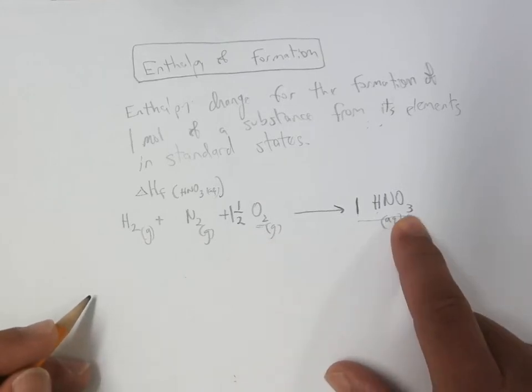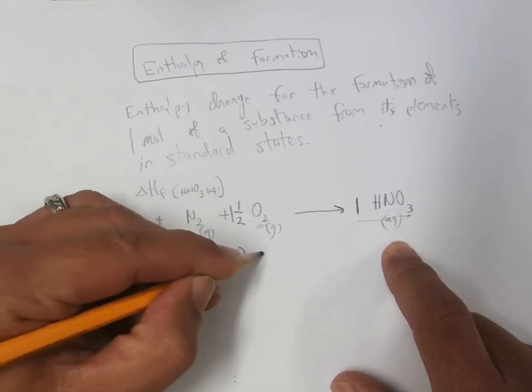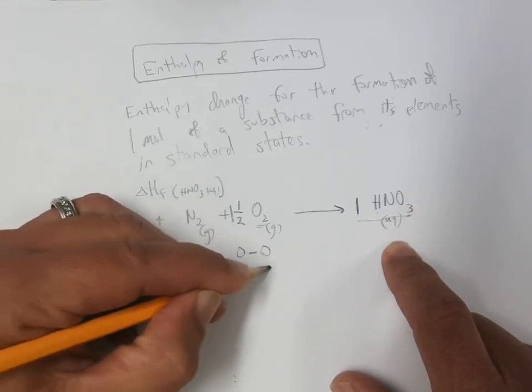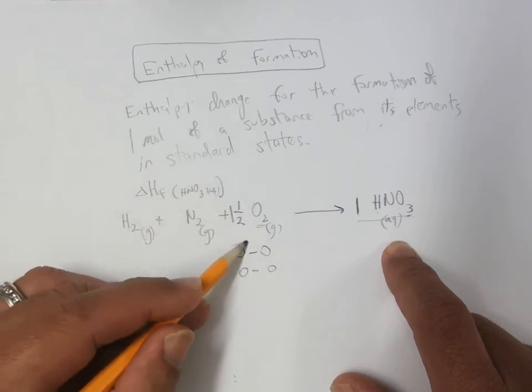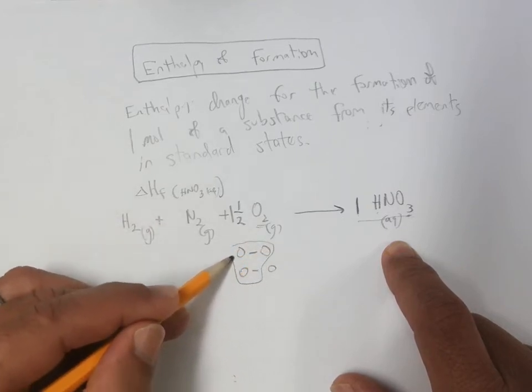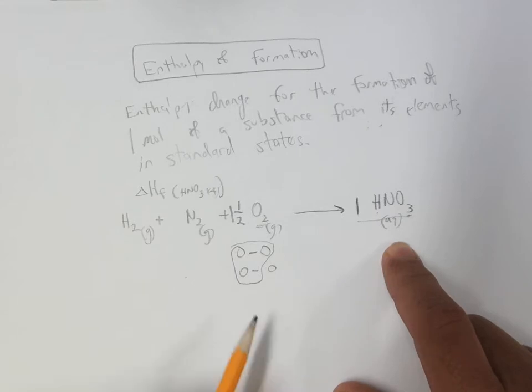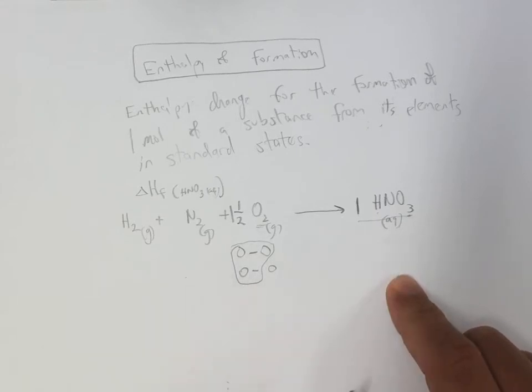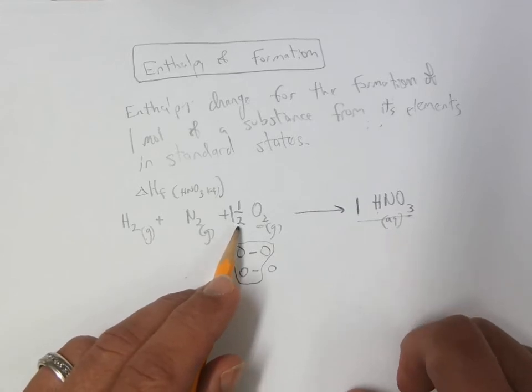You would have three moles of oxygen atoms. And sometimes I like to show that with a little picture. If you have one and a half oxygen molecules, that would be the three oxygen atoms to make the product. So hopefully that math is straightforward enough.